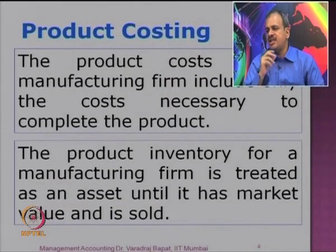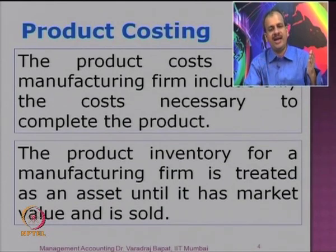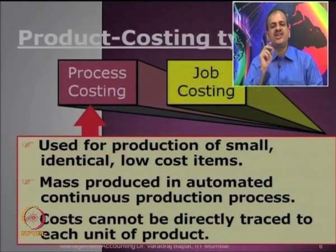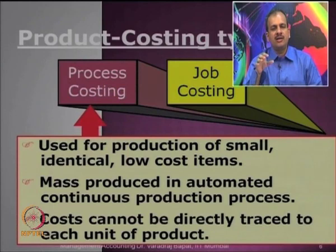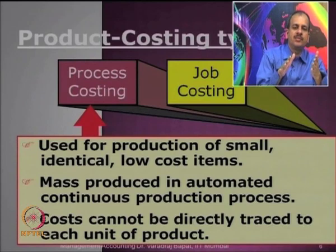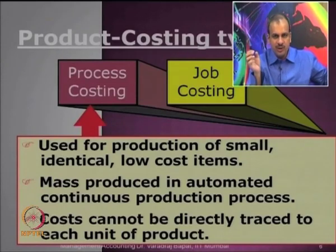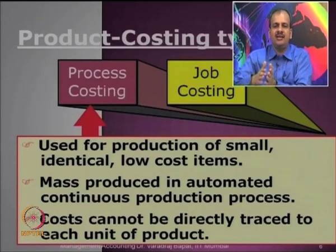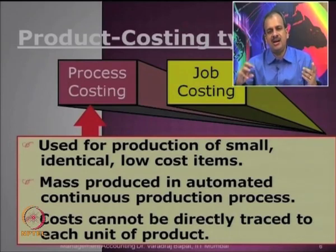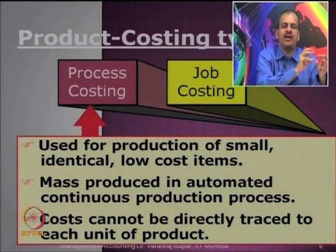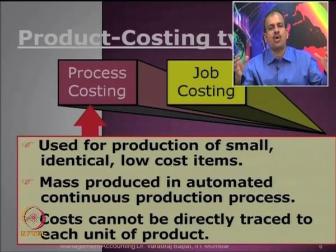It is very important that we get a fair cost of our product, because decisions like pricing and make-or-buy are based on that. We need to calculate the correct cost so we can compare and control. Many control and decision-making functions are based on right product costing. In product cost, especially in manufacturing concerns, the cost for completing a product becomes important and is treated as an asset in the balance sheet, because inventory is one of the important assets.